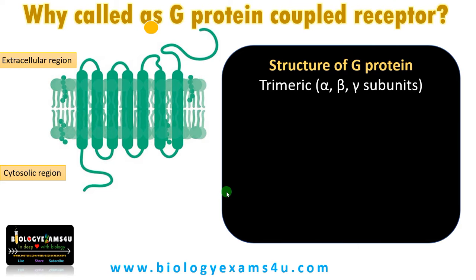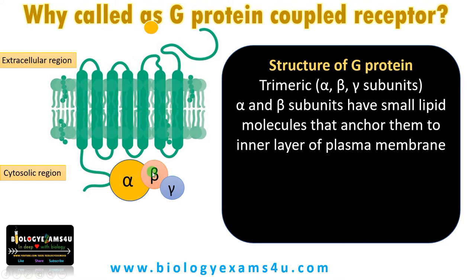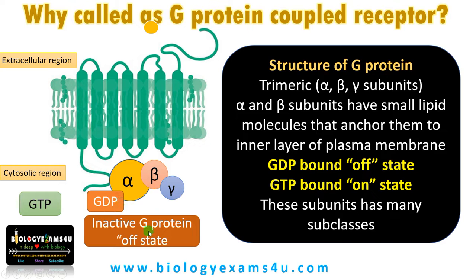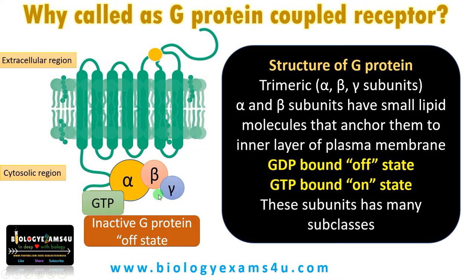Now let us see why this receptor is called G-protein coupled receptor. This receptor is associated with a protein called G-protein. G-protein is a trimeric protein with three subunits: alpha, beta, and gamma. The alpha and gamma subunits have small lipid molecules that help them attach to the inner layer of the plasma membrane. This G-protein is called so as it is bound to either GDP or GTP. If the alpha subunit is bound to GDP, it is in the off state or inactive state. Upon ligand binding, there will be a conformational change that causes the alpha subunit to exchange GDP for GTP, making it active — the GTP-bound G-protein is in the on state.